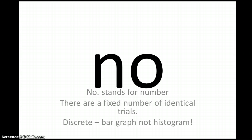'No' stands for number — there are a fixed number of identical trials. They're discrete; there's a bar graph, not a histogram. Just remember it's a whole number — it's not continuous.